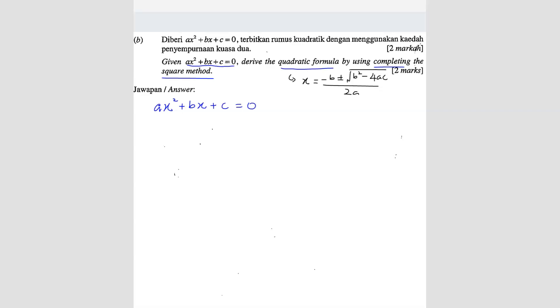So this is what they gave. So before we even start, please understand that the coefficient must always be 1. The coefficient of x square must be 1. So we're going to divide the whole thing by A. When you divide by A, you will get x square plus B over A x plus C over A equals to 0.